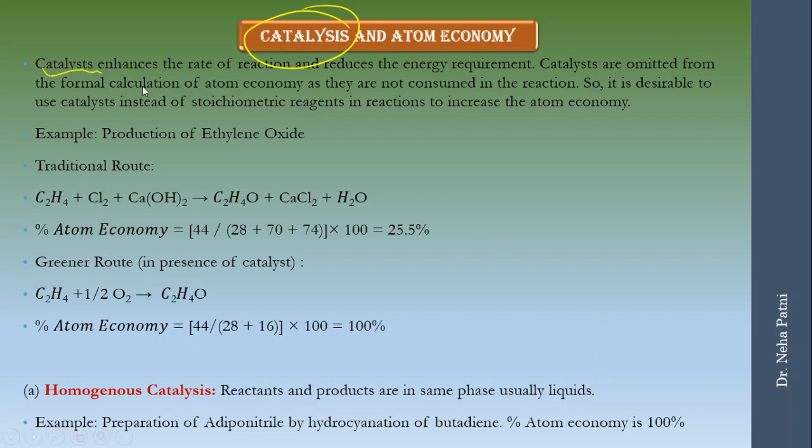Coming to one more aspect of atom economy which is catalysis. As you all know that when we use catalyst it enhances the rate of reaction. So what happens to atom economy then? If a traditional route is followed like for this reaction ethylene oxide is produced here but then there is a byproduct calcium chloride and water. If you want to calculate atom economy you will only use this - 44 is for this and then 28 plus 70 plus 74 is the molecular weight of reagents involved. You will get very less atom economy.